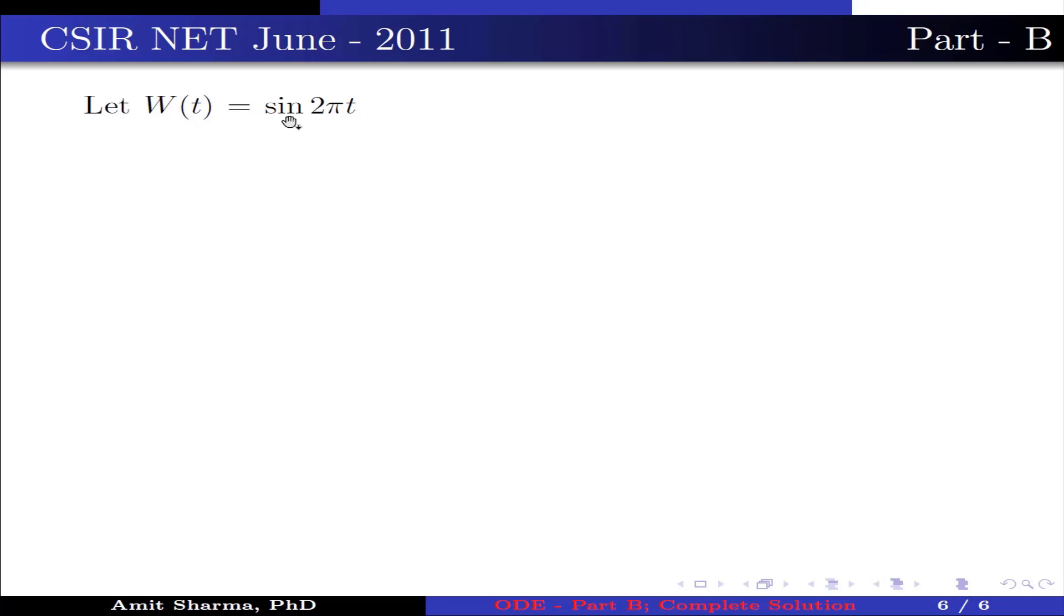Let W(t) is sin(2πt). This is 0 only when t is 0 and 1 that belongs to [0,1]. This implies option 2 is false.